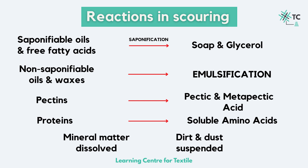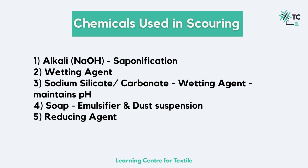The chemicals used for scouring involve an alkali like NaOH, which is used for saponification. The addition of alkali at high temperatures is not sufficient because the surface tension of water is very high, so a wetting agent is also added to reduce surface tension. Sodium silicate or carbonate is added to hydrolyze the pectins; it also acts as a stabilizer and maintains the pH of the mixture. Soap is added to the mixture, which acts as the emulsifier and suspends dust.